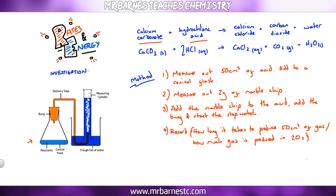There are three things you could be asked to investigate: surface area, concentration, and temperature. The method is exactly the same each time — all we do is change one independent variable and keep everything else controlled.